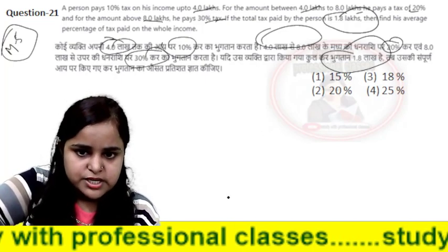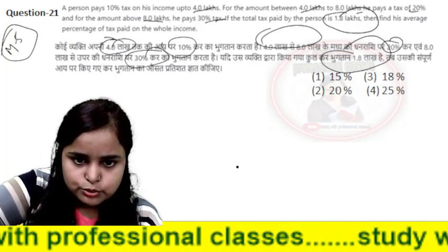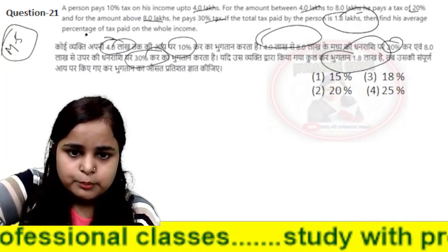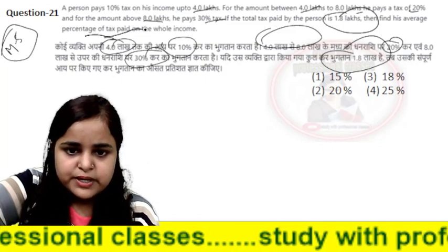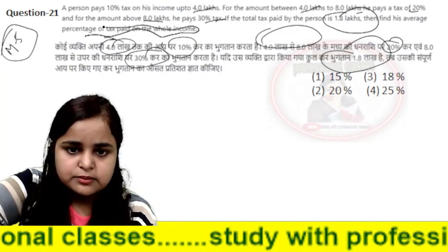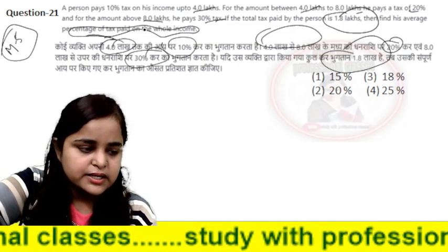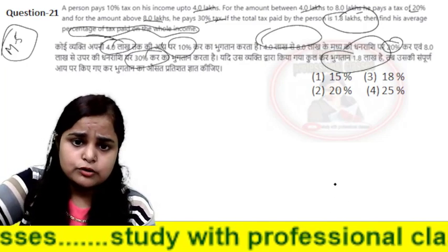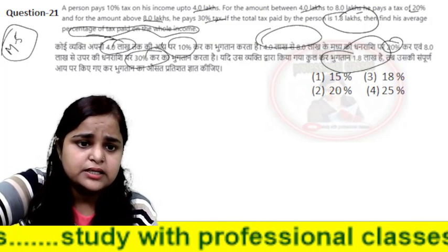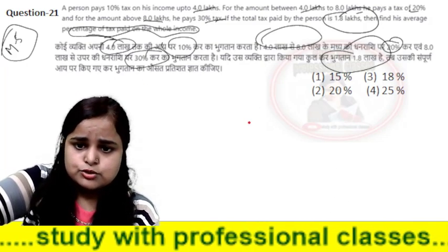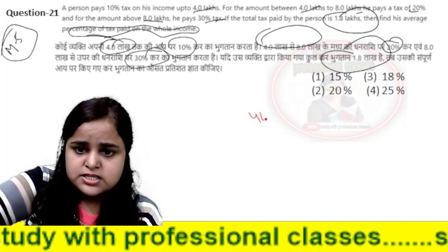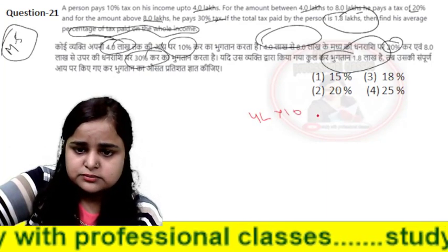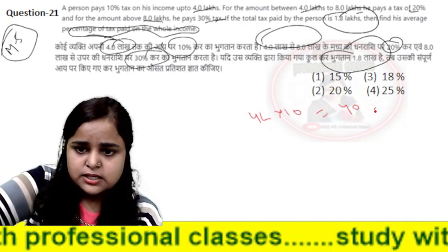If we solve the total income, we find the total amount of tax on his whole income. For the first slab, the total is 4 lakhs and he pays 10% tax, so he pays 40,000.